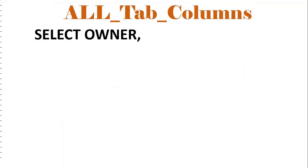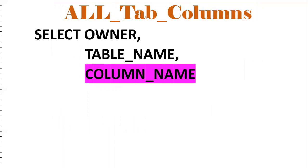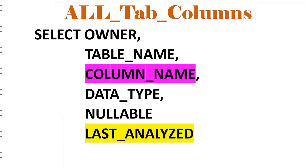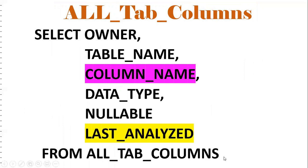ALL_TAB_COLUMNS gives information about the columns available in a particular table — including owner, table name, column name, data type, nullable field, and last analyzed. From ALL_TAB_COLUMNS you can get all column details for any table.